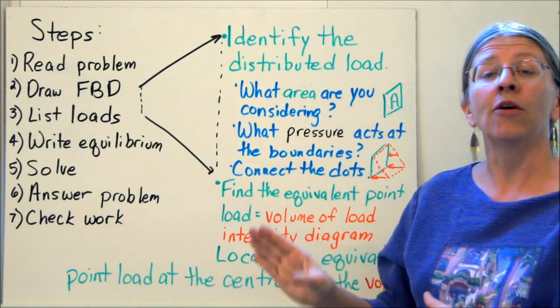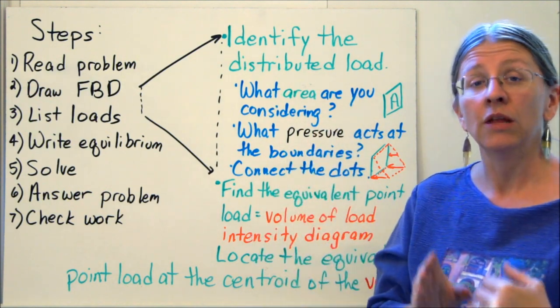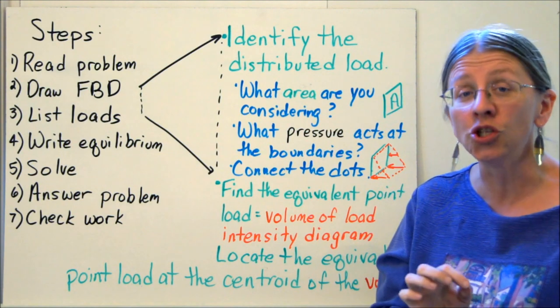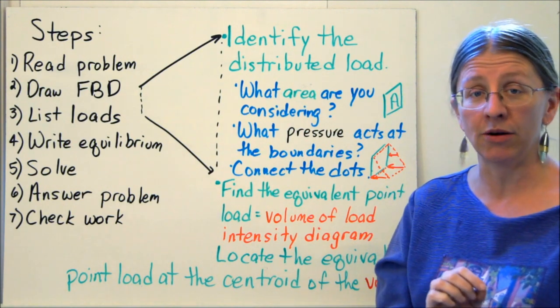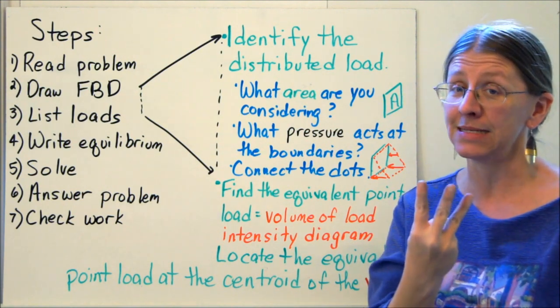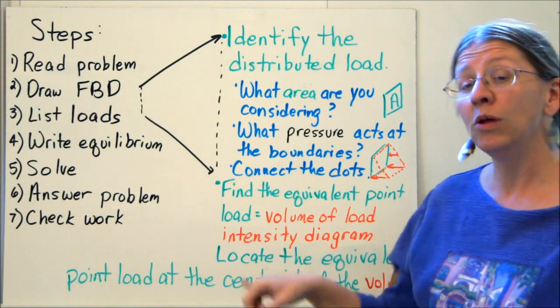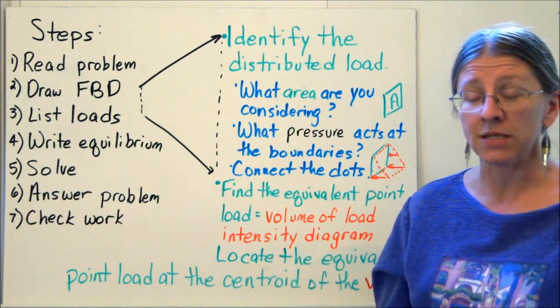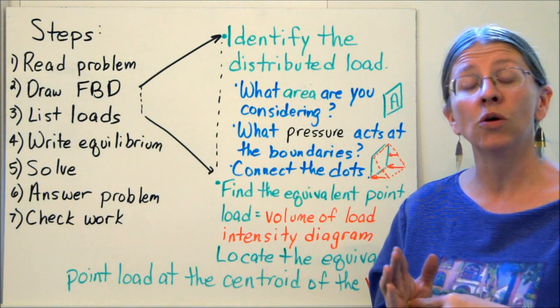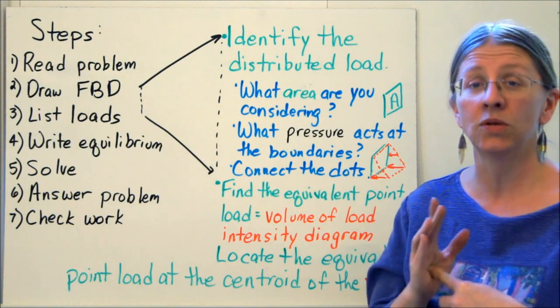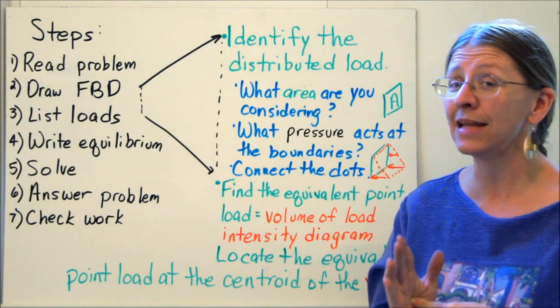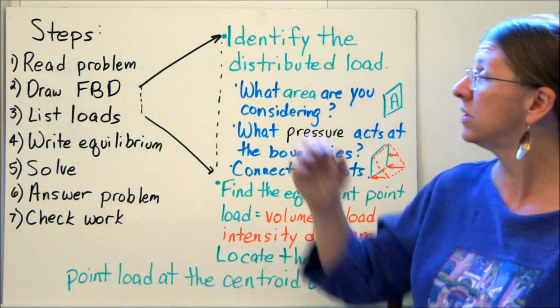Once you have your load intensity diagram, find the equivalent point load. The equivalent point load is going to be the volume of your load intensity diagram. Now remember, this is a 3D system. So it's not an area anymore, it's a volume. And it will be as any other distributed load is. The equivalent point load is located at the centroid of the load intensity diagram. Not the centroid of the plate. The centroid of the load intensity diagram.